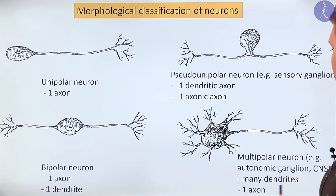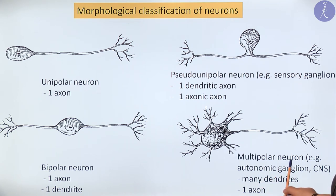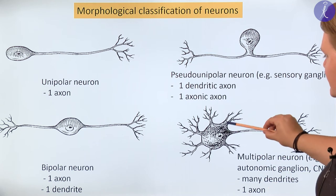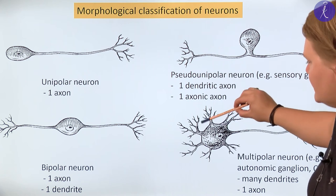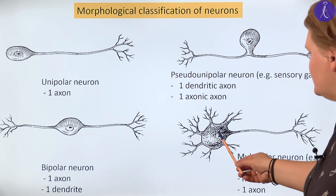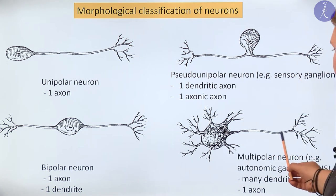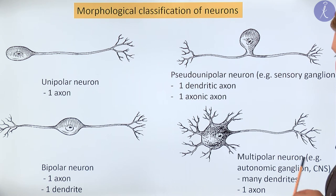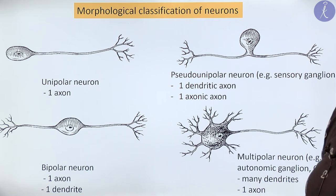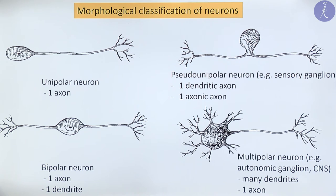On the opposite side we have the axonic or central process, because it is oriented toward the central nervous system. The last type is the multipolar neuron — in this case you can see many dendrites, not just one, and just one long thin axon. Multipolar neurons are found in the autonomic ganglion and also in the central nervous system.